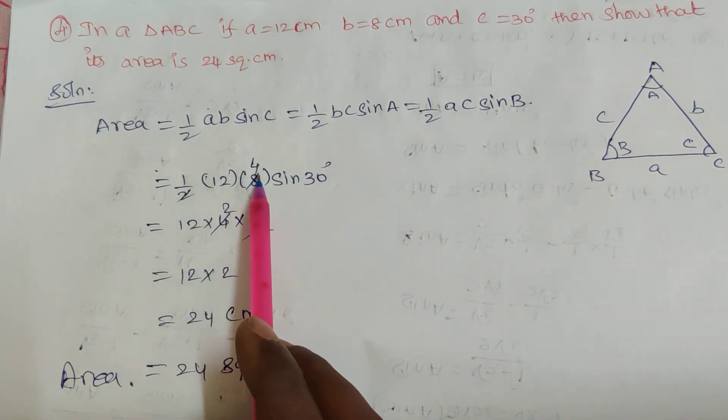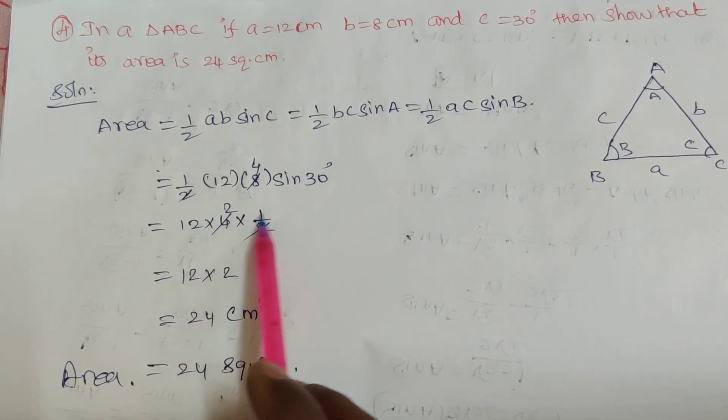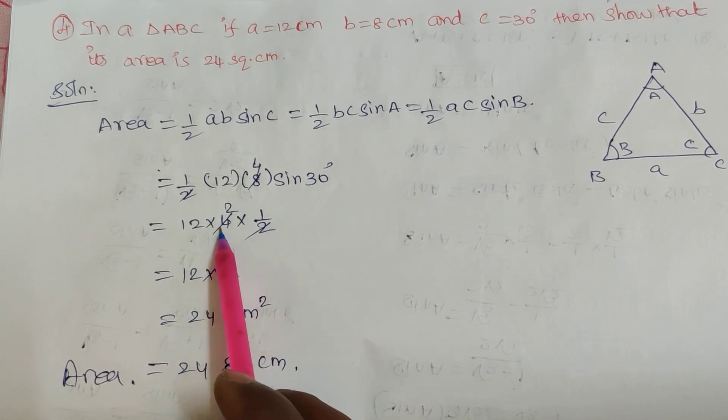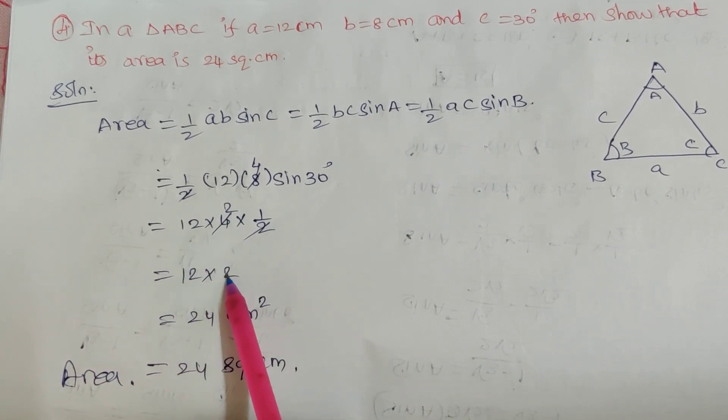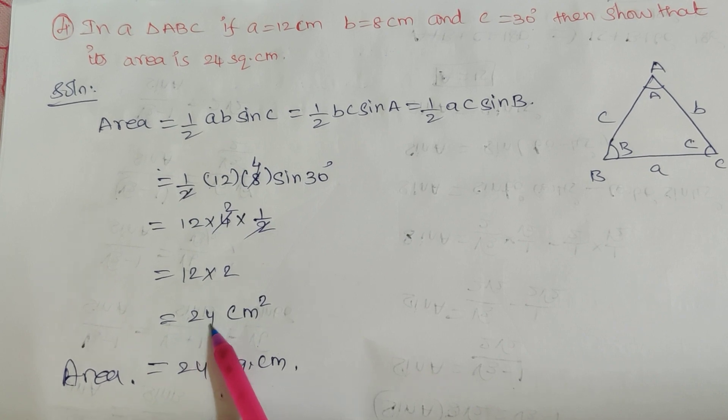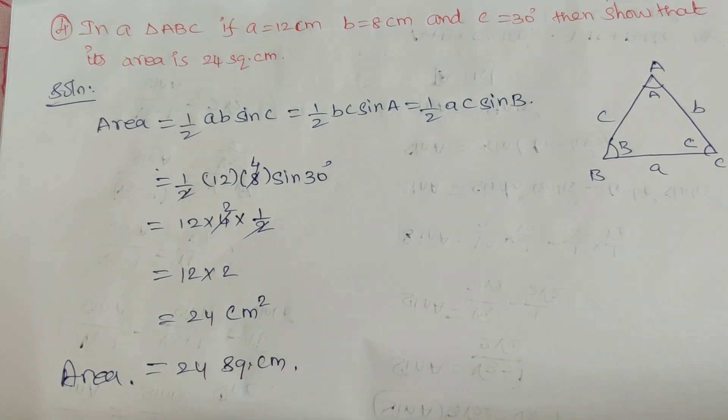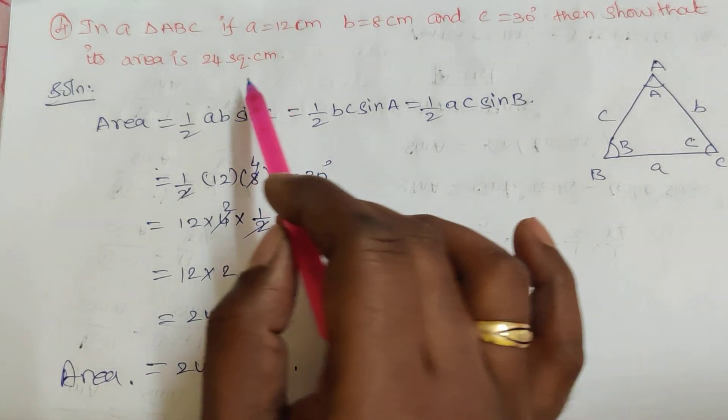So 2 and 8 get cancelled 4 times. So 12 into 4 into sin 30 degrees, value 1/2. So these 2 and 4 get cancelled 2 times. So 12 into 2, that is equal to 24 centimeter square. Area is equal to 24 square centimeters.